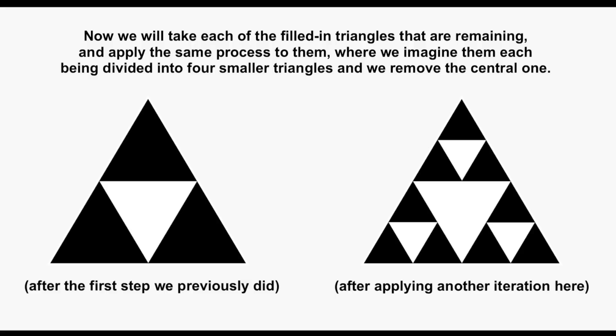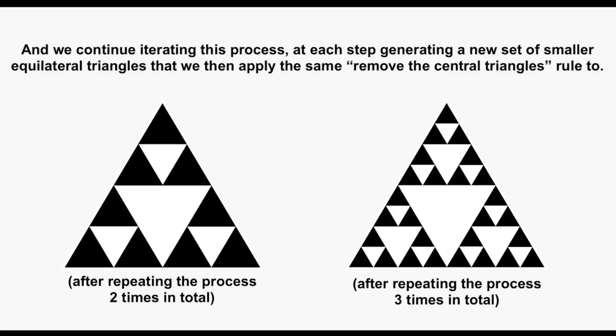And we're going to repeat the process. Now, taking each of those triangles, imagine subdividing them into four even smaller triangles and removing the central one. We're going to iterate this process at each stage, looking at whichever triangles are left and removing some smaller central triangle from each of them.